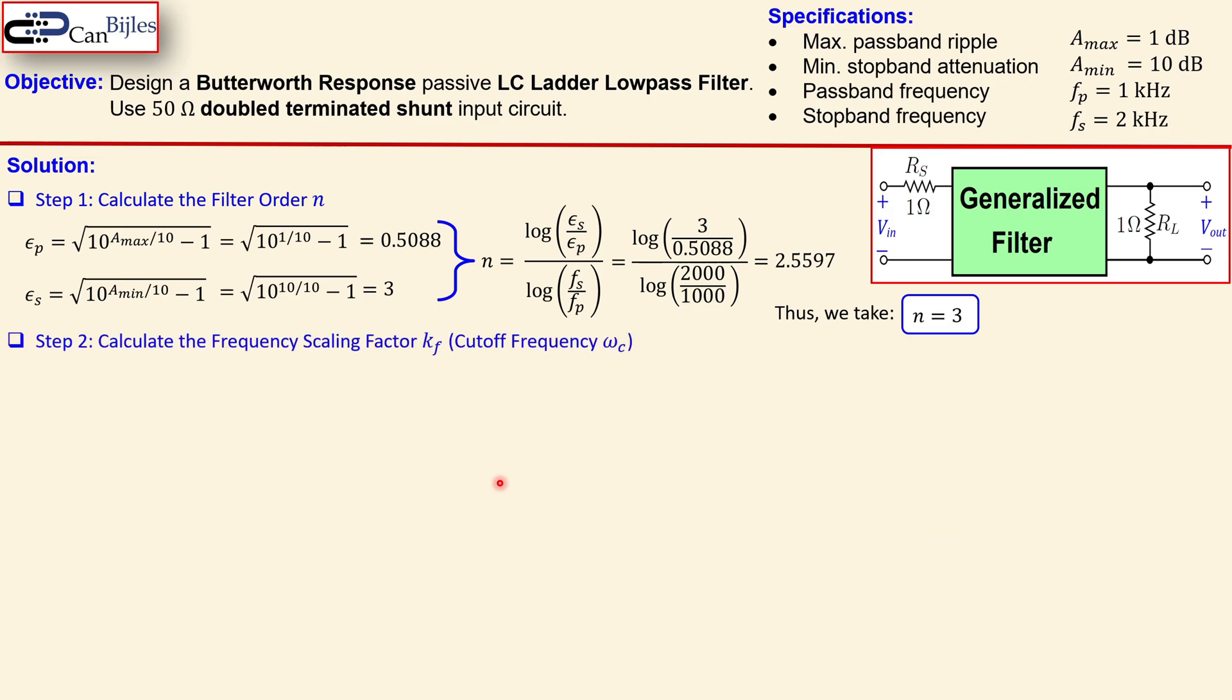Okay, now we calculate the frequency scaling factor K_f of this circuit and let's also call the cutoff frequency for this case low pass filter. K_f is given for the low pass filter for the Butterworth response by this formula. K_f is omega_p times the epsilon we just calculated to the power of minus 1 over n.